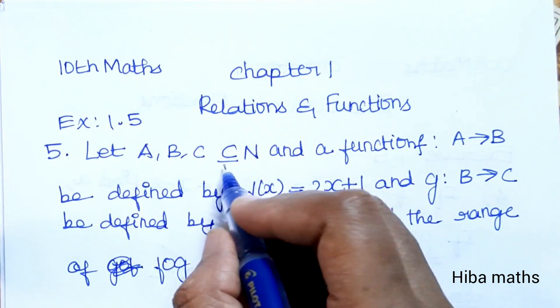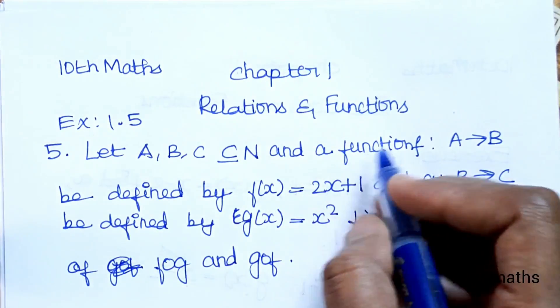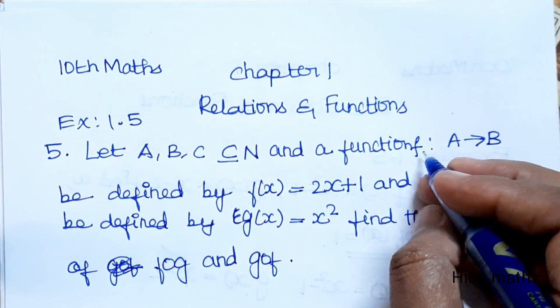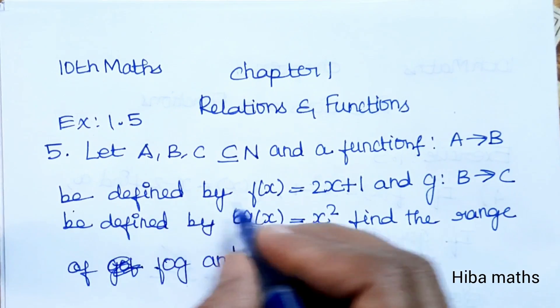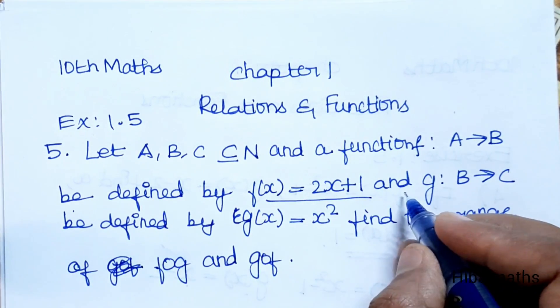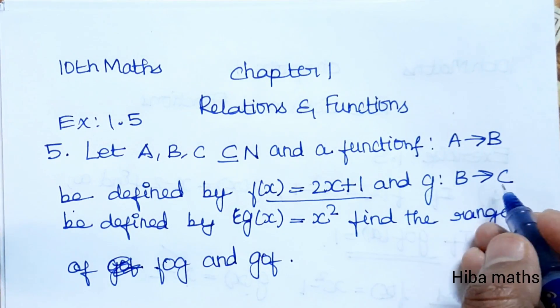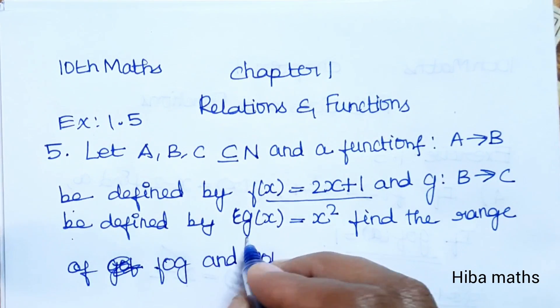Let A, B, C be subsets of natural numbers and a function f: A→B defined by f(x), and g: B→C defined by g(x).